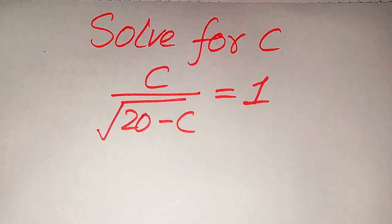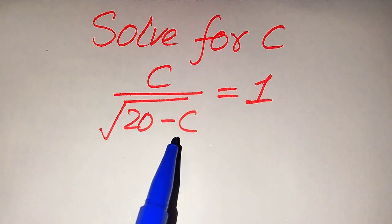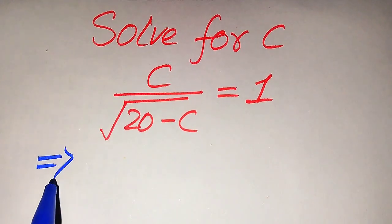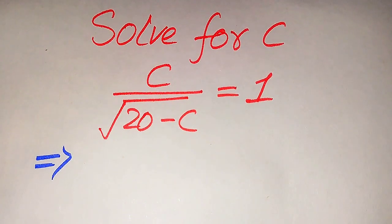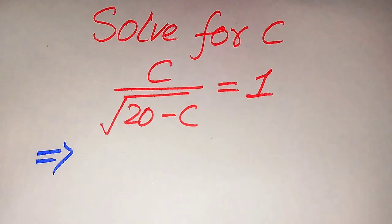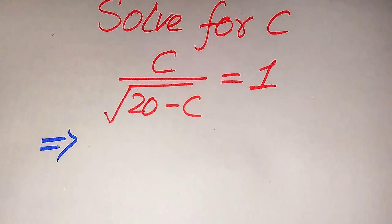Hello everyone. How to solve this problem: for the values of C, if we have C divided by the square root of 20 minus C equals 1, and we solve this problem for all the values of C. First we find all the roots of this equation, and at the end we will verify which of the roots are solutions and which are extraneous roots. I will also explain the difference between a solution and an extraneous root.